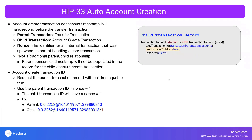This feature introduces the concept of parent and child transactions. Once you initiate the transfer to the account alias, in the background it actually submits an account create transaction first, and then completes the transfer transaction once that account is created. So in this scenario, the parent transaction is the transfer transaction that the user submitted, and the child transaction is the account create transaction that happened in the background. Child transactions are identified by a nonce value.